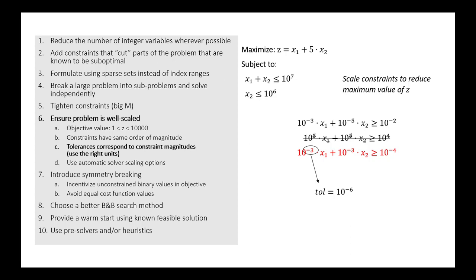The tolerance you use for solving the problem should correspond to the order of magnitude of the coefficients in the constraints and objective. If you have coefficients on the order of 10 to the minus 3, your solution tolerance should probably be about three orders of magnitude lower than the lowest coefficient — so maybe 10 to the minus 7 looking at the right-hand side. If you're using a default tolerance of 10 to the minus 3 but your coefficients are on that same order of magnitude, the solution you get back is not going to be very reliable.